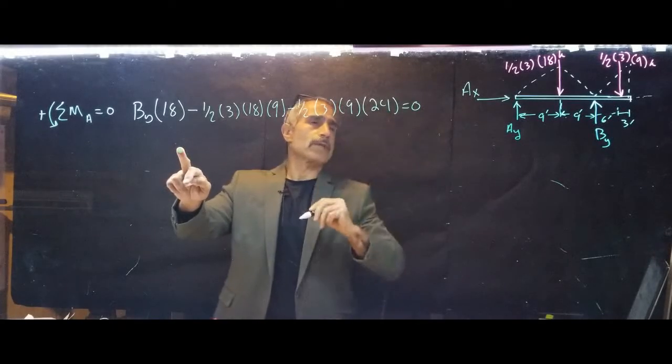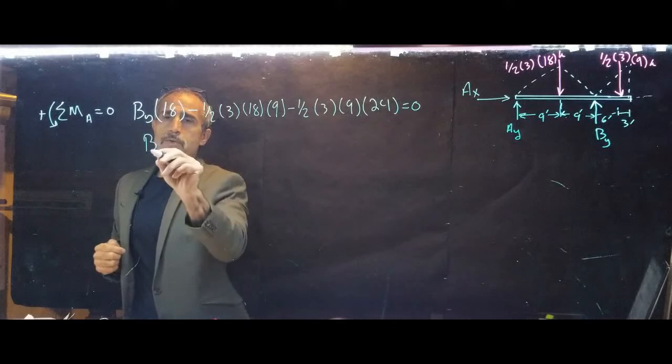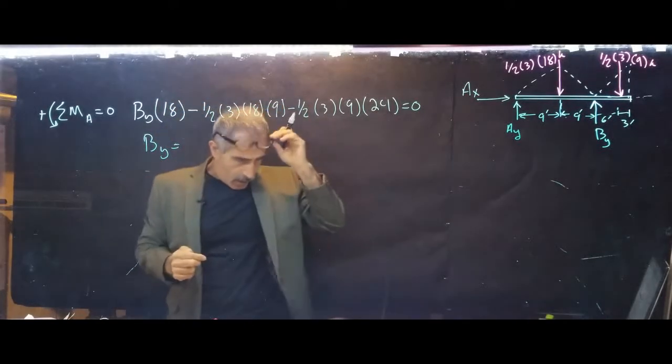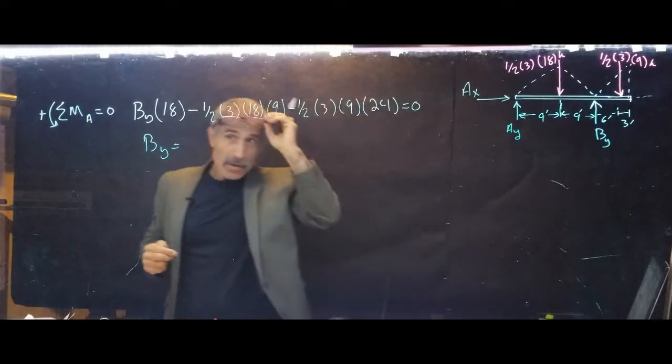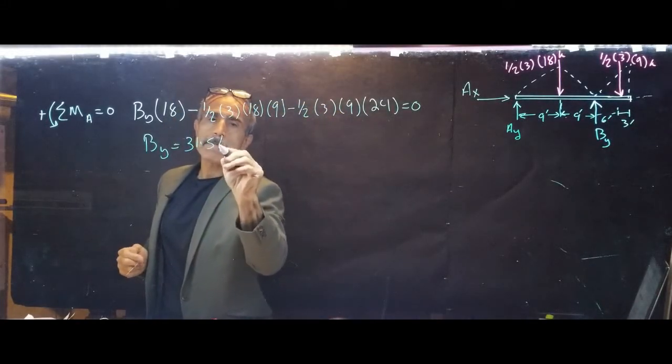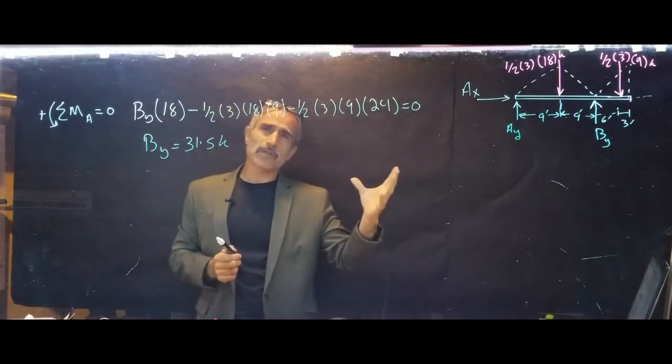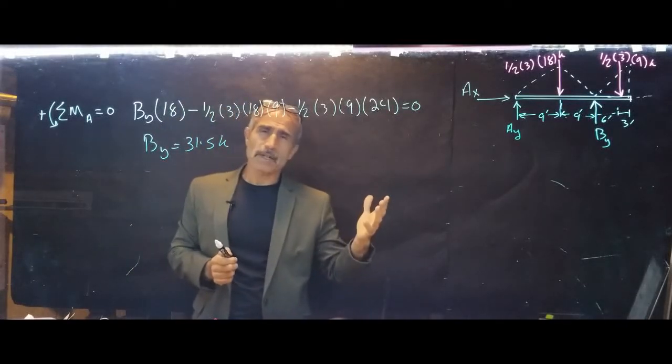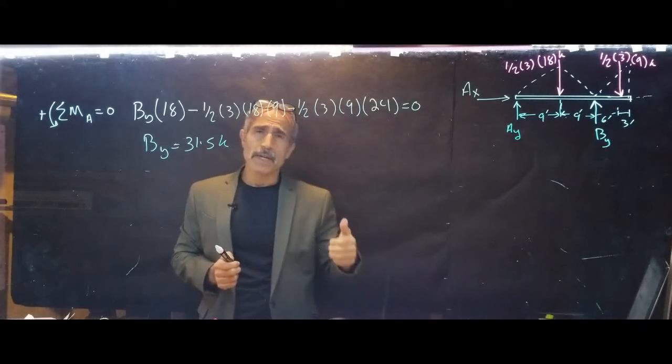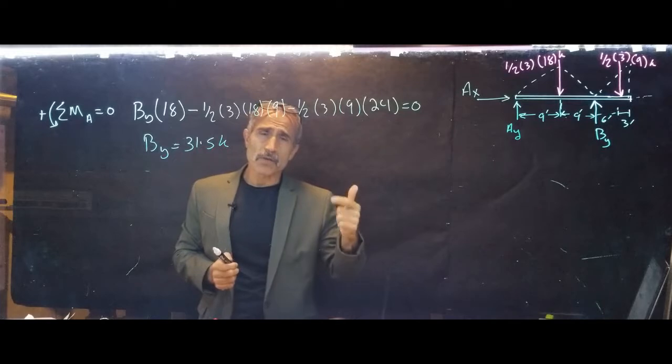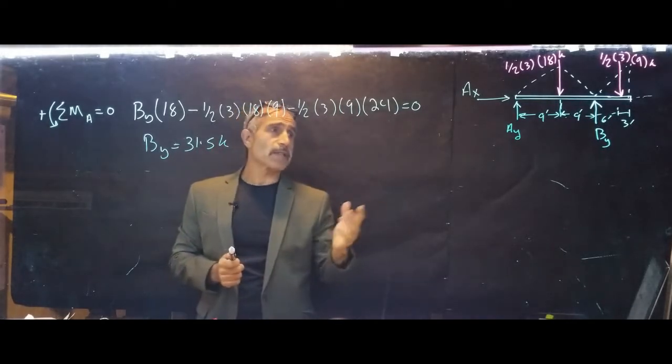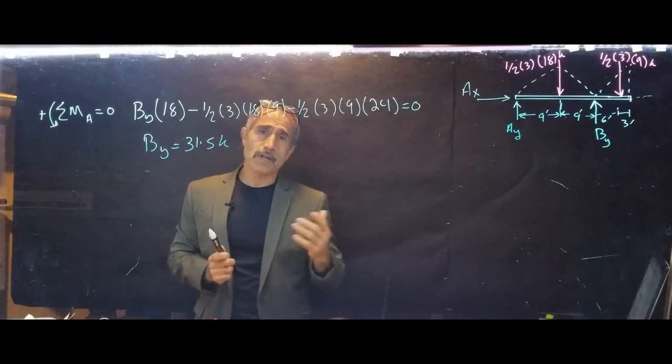Equals zero, so By comes out to 31.5 kips. When we look at a structure like this, we talked about in class there are three equations of equilibrium we can use to solve the problem: summation of moments, summation of Fy, summation of Fx. So we did the summation of moments and we calculated By. Now we can go ahead and do summation Fy and summation Fx.